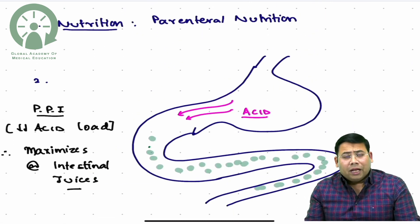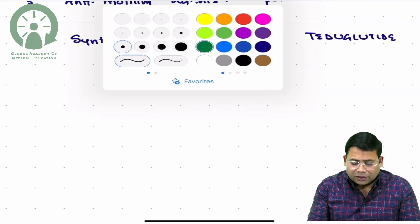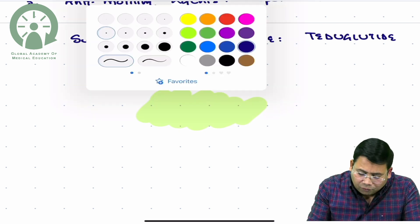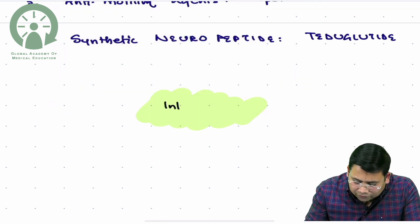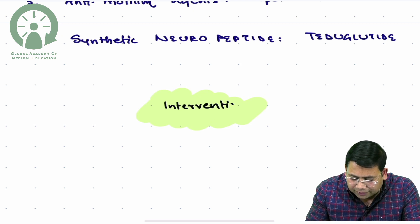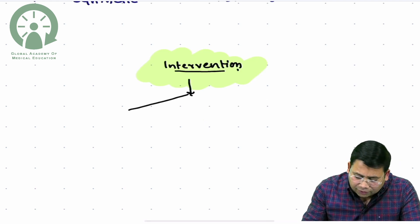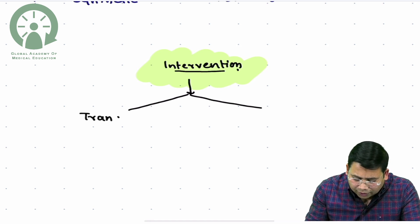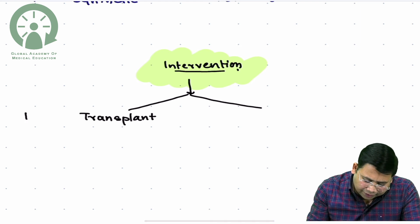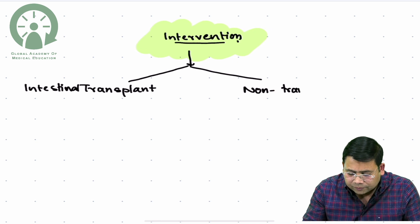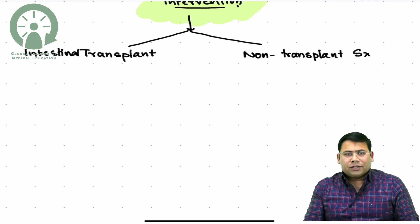Over time, conservative management helps. But for patients where conservative management fails, we have to go for intervention. If medical management fails, we plan intervention. There are two main options: either we do a transplant surgery — specifically an intestinal transplant, though this is not always feasible — or we do non-transplant surgeries, which fall into two categories.